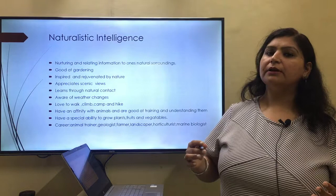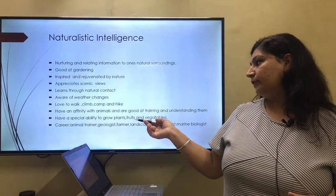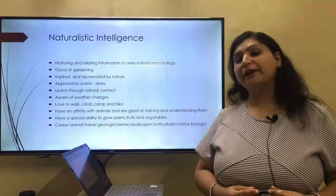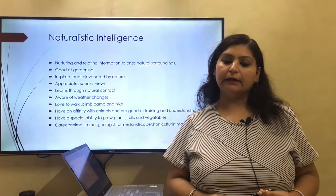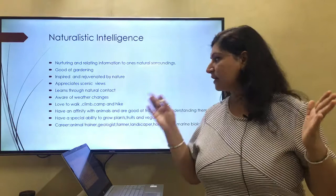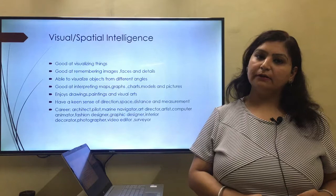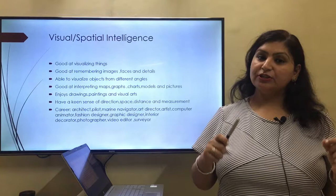Examples of people high on naturalistic intelligence include animal trainers, geologists, farmers, landscapers, horticulturists, and marine biologists. This concludes Gardner's theory of multiple intelligences. Spend time with these kinds of people to better understand the theory, and reflect on which type of intelligence you yourself have — that will make this theory very interesting for you.